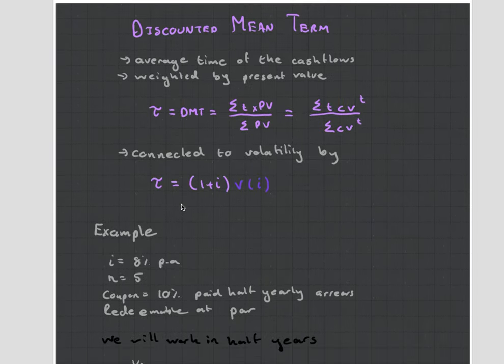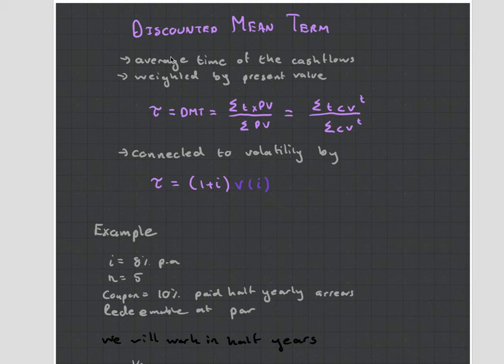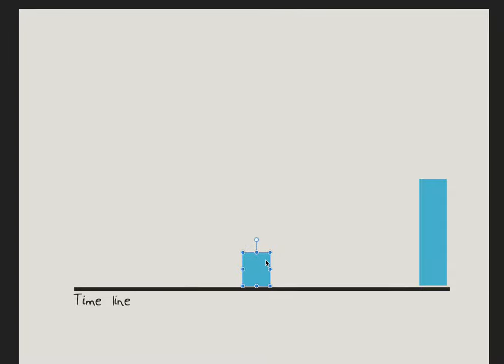The first thing we look at is discounted mean term, or DMT. I don't recommend Googling DMT because you'll find a psychedelic drug, not this mathematical concept — Google 'discounted mean term' instead. What it is basically saying is: it is the average time of the cash flows weighted by their present value. If I had just one cash flow at time 5, the discounted mean term would be 5. But if I had one at 5 and one at 7 years, the discounted mean term would be 6 years.